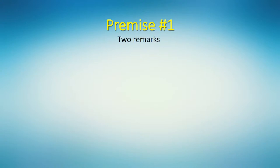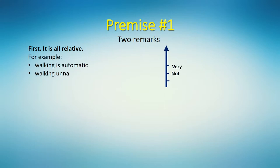Two quick remarks on this subject. First, is it all black and white? Does an activity have to be either automatic or controlled? No, of course not. It is all relative, it is more like a scale. Walking is automatic, but walking unnaturally slowly is less automatic. Walking backwards is not at all automatic.